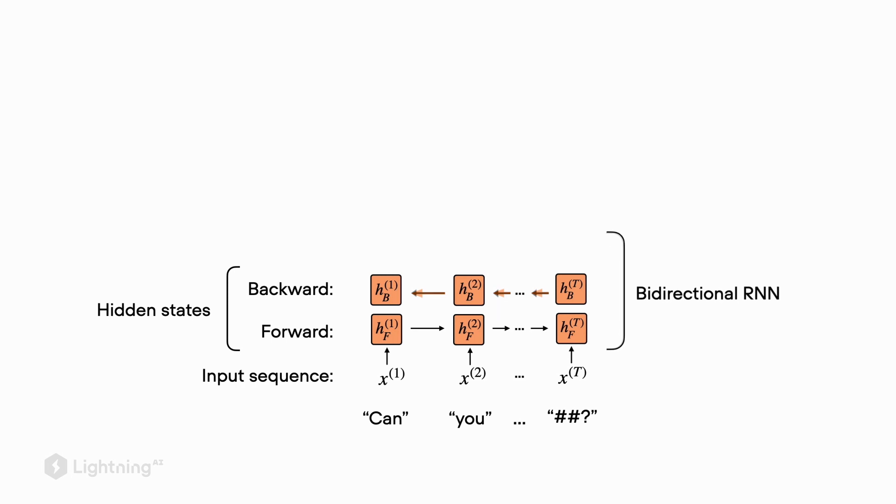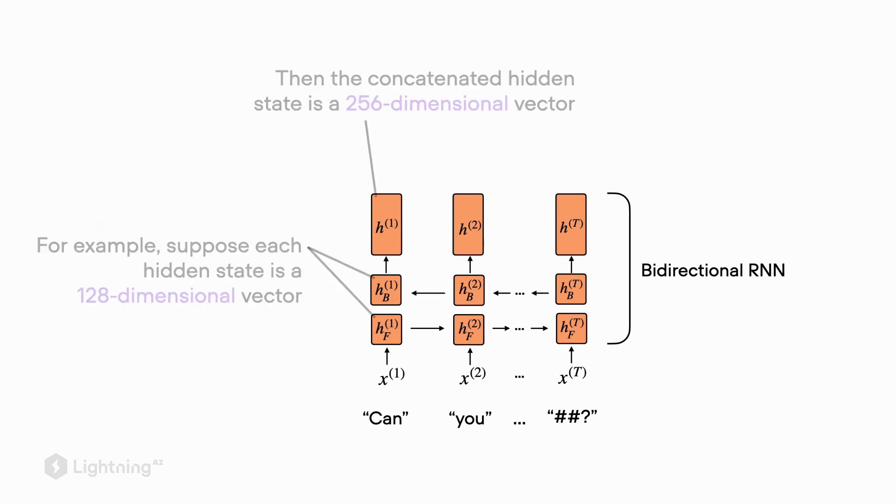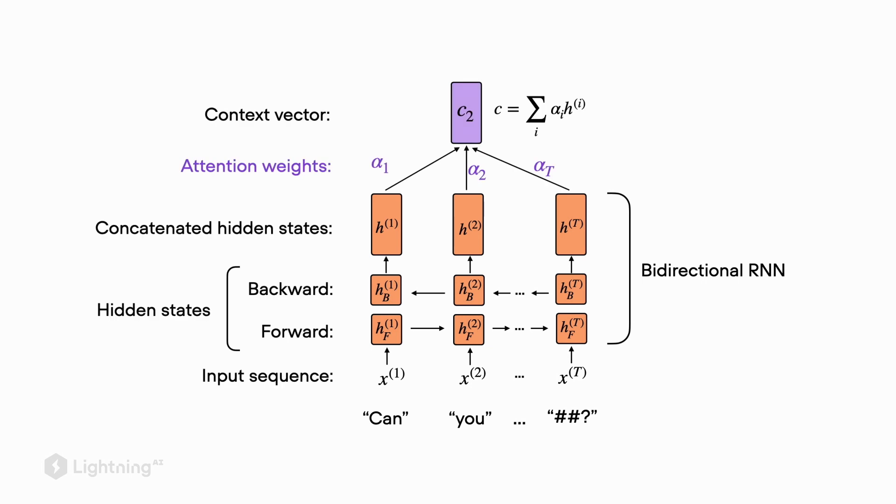In a bi-directional RNN, we concatenate these two different hidden representations: the forward and the backward representation. For example, if the hidden representation of the forward and backward paths are both 128-dimensional each, the concatenated representation would be 256-dimensional. To go from the hidden representations to the context vector, we multiply each hidden representation with an attention score and then sum them up. Essentially, we are computing a weighted sum using the attention scores for the weighting.